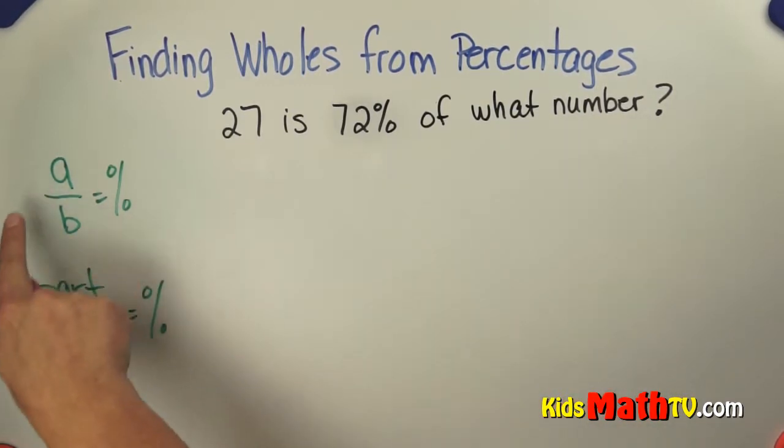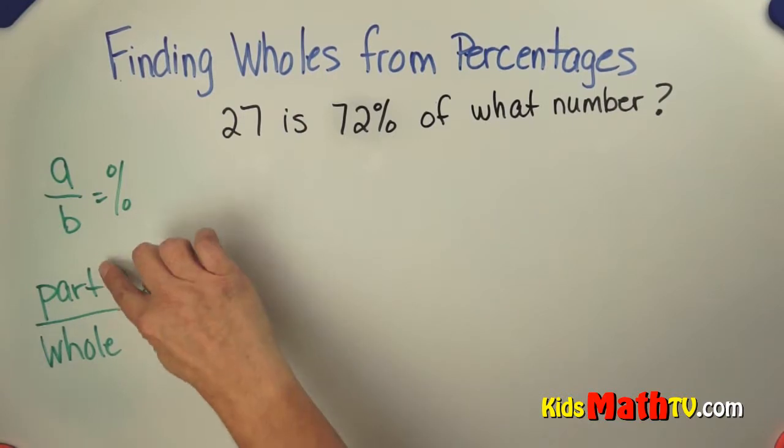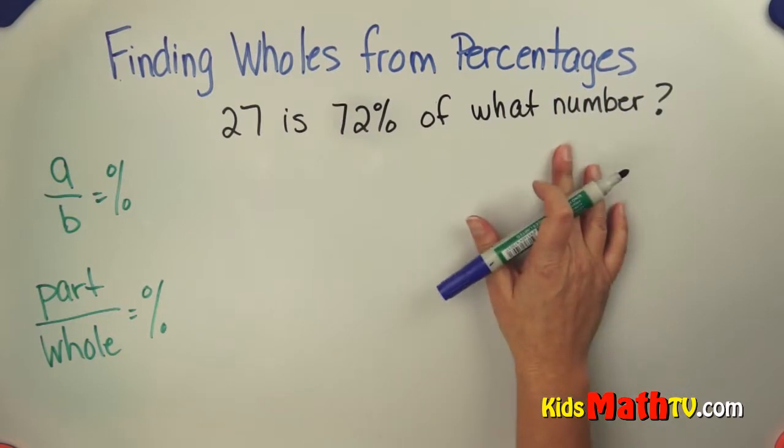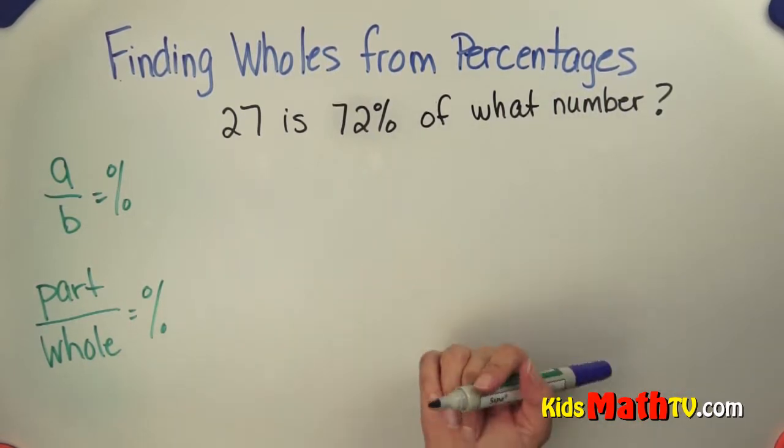So remember, A divided by B is the percentage, or the part over the whole gives you the percentage. We can use an equation. We can simply translate this into mathematical terms.